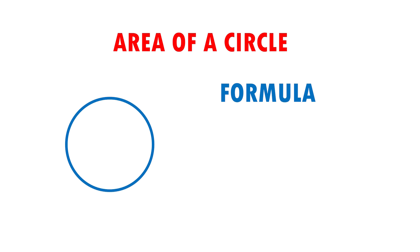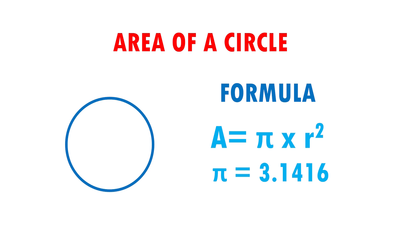The formula to calculate the area is: Area equals pi times radius squared. Remember that the value of pi will always be 3.1416. To calculate the area of a circle, we will have to square, so let's look at some examples quickly.